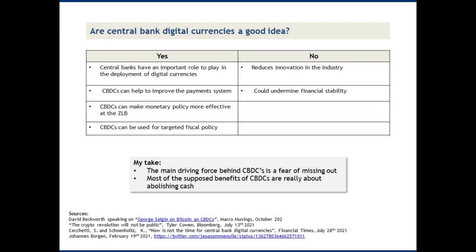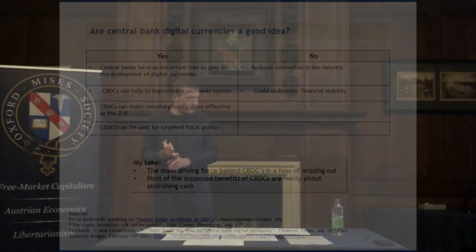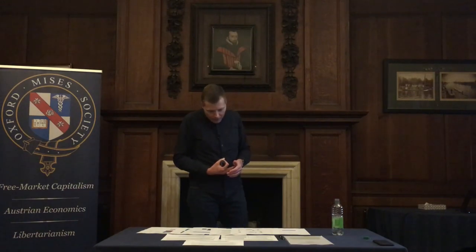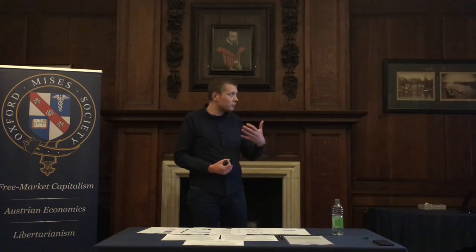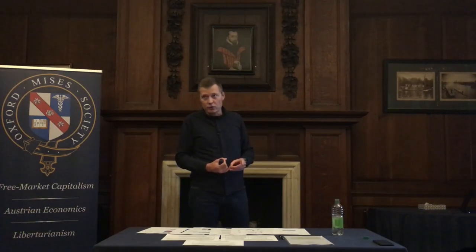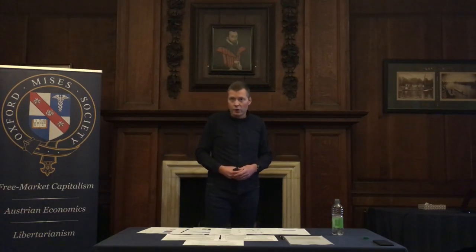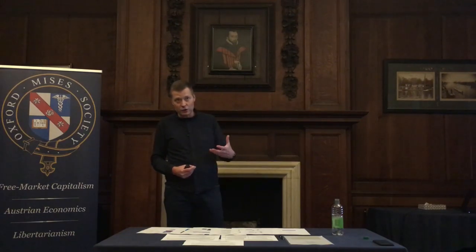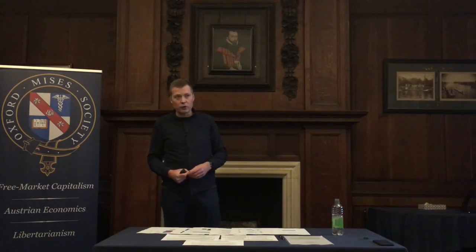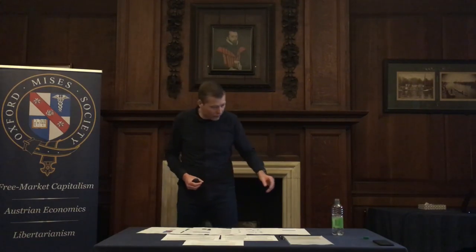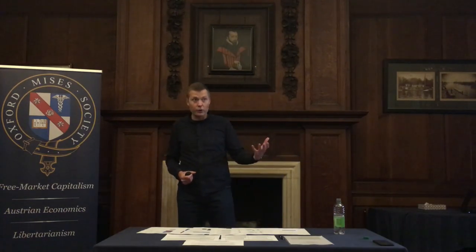We already have fairly effective substitutes for cash. The reason some people want to retain cash is not a lack of options — it's because cash has advantages that digital currencies don't have, and a CBDC won't provide those advantages. Third argument: CBDCs make monetary policy more effective at the zero lower bound, enabling things like negative deposit rates or helicopter drops. But whether this is good depends on whether you want central banks to have more power.